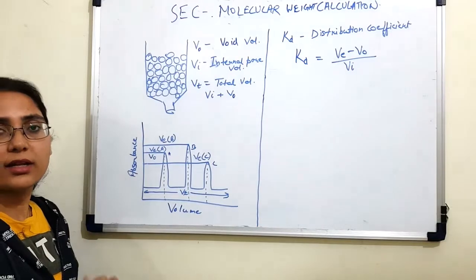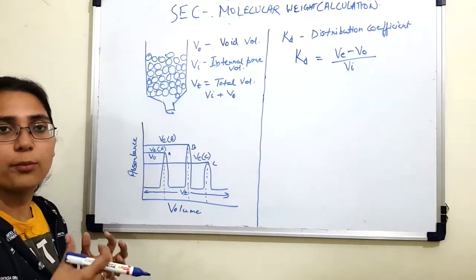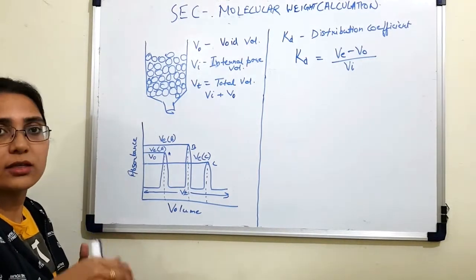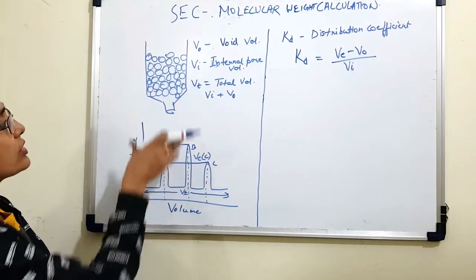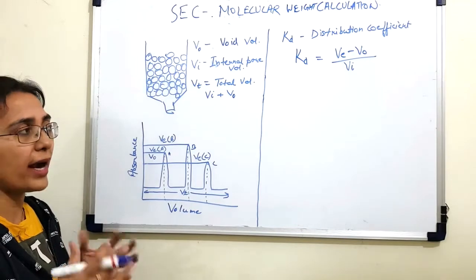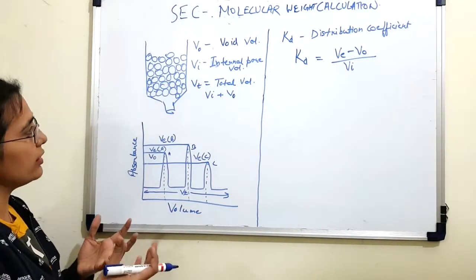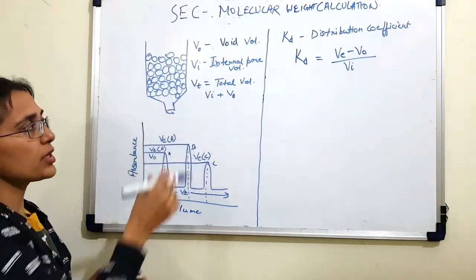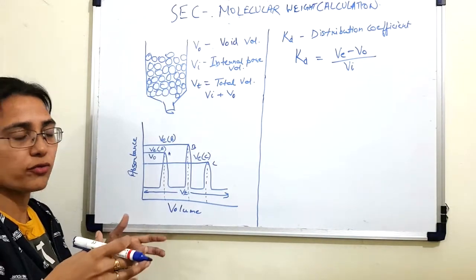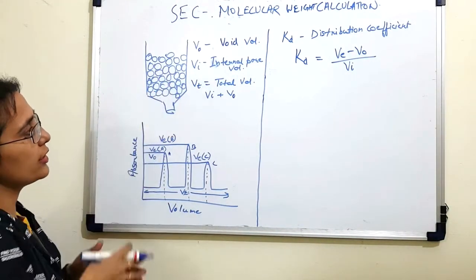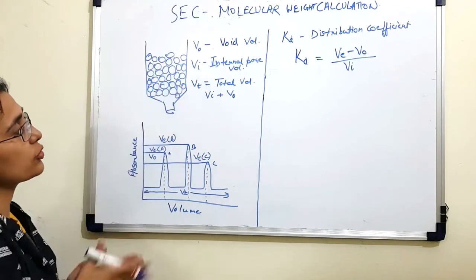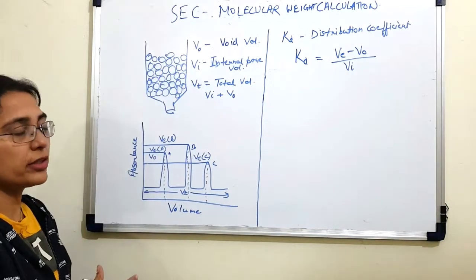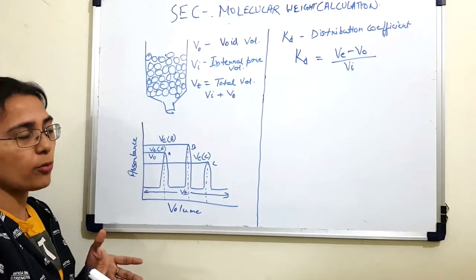Size exclusion chromatography is an analytical technique in which the separation of different components of a sample is done on the basis of their molecular size, and the separation happens in the decreasing order of molecular size. The stationary phase used in size exclusion chromatography is made up of a matrix of silica beads or agarose gel, and these resins have different pore sizes. Your protein of interest must have a size within the size range of the pore size of the resin you are using.